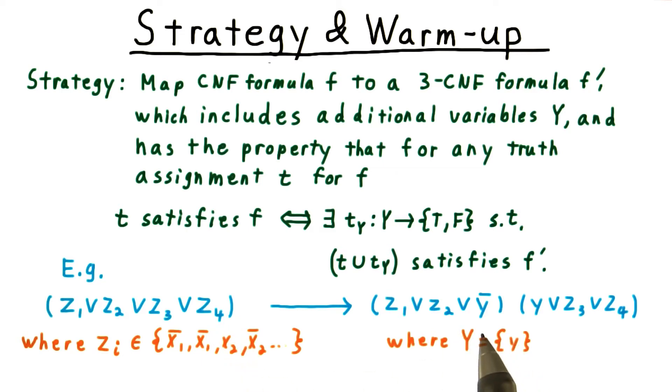On the other hand, y might be false. But that then implies that z3 or z4 is true. And hence, this original clause would be true as well.